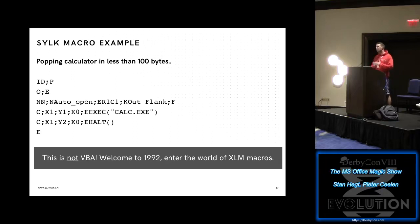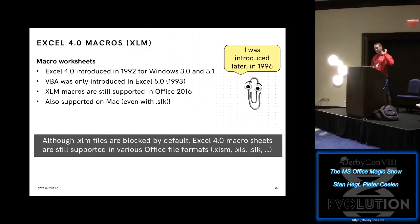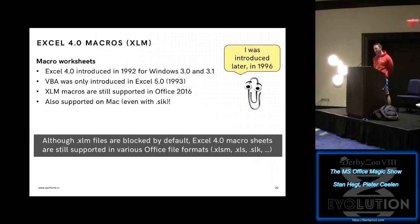XLM macros are way older than Clippy. XLM macros are actually Excel 4.0 macros. Excel 4.0 was introduced in 1992 for Windows 3.0 and 3.1. VBA was introduced later, in 1993 — so by this time, VBA didn't even exist for Word and Excel. But XLM macros are still supported in Office 2016. It gets even better: they're also supported on Mac, including in SLK files. So yes, you can do a 99-byte process-creation SLK file on Mac as well.